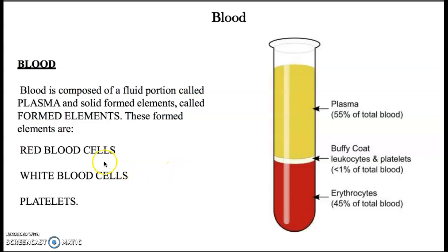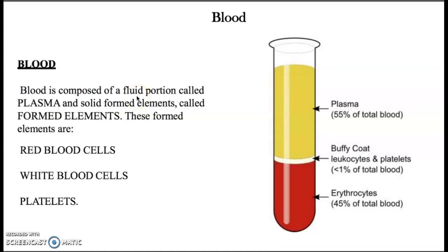The cells or formed elements of the blood make up 45% of the blood. The other part, which is liquid, is a liquid matrix of the specialized connective tissue called blood. It is composed of plasma, which is a fluid portion containing proteins and other elements, and it makes up 55% of the total blood.